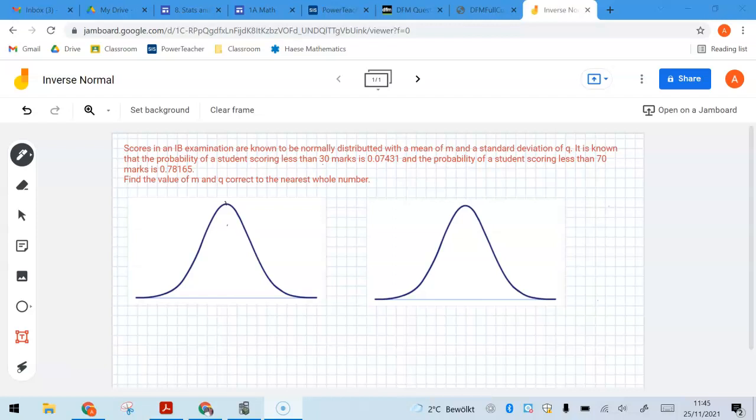So I've got two normal distributions here, and I'm just going to put down here the mean is m. I don't know it. And the mean here is m. I don't know it. But I'm going to put this information on here.